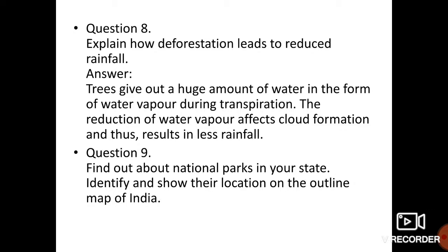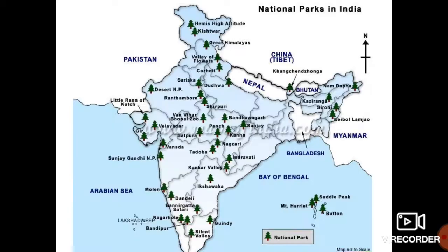Question number 9: Find out about national parks in your state and identify their location on the outline map of India. Hamare alag-alag states mein kaun-kaun se national parks hain unki location bataaiye. India ka map saamne hai jisme kuch national parks ke baare mein bataya gaya hai. Jo main national parks hain hamare India mein unki location aur state ke baare mein bataya gaya hai. You can write any 5 to 10 national parks from the map.